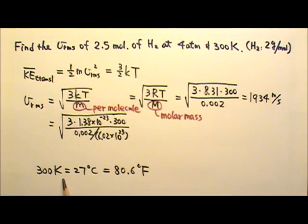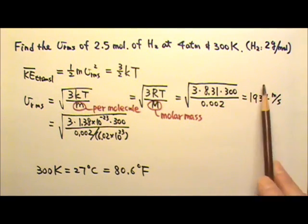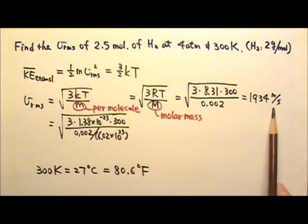And 300 Kelvins is 27 degrees Celsius or 80.6 degrees Fahrenheit. So that's the root-mean-square speed of hydrogen gas on a warm day.